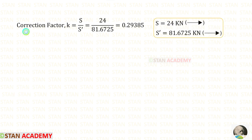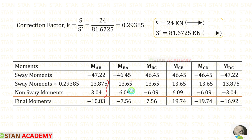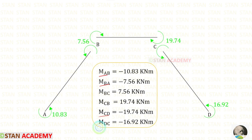Now let us find the correction factor K using the formula K = S/S'. Applying the values of S = 24 kN and S' = 81.6725 kN, we calculate K. In the final table, enter all sway moments, multiply by K to get the corrected sway moments, then add the non-sway moments. The real final moments for MAB, MBA, MCD, and MDC are negative, meaning they act anti-clockwise. MBC and MCB are positive, meaning they act clockwise.